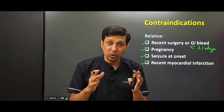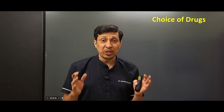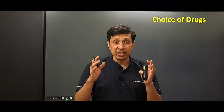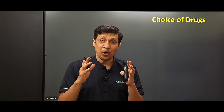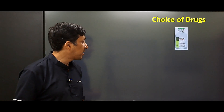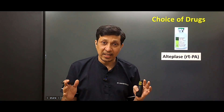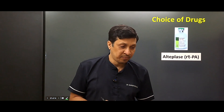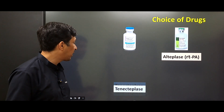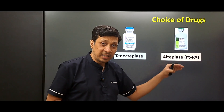Now we come to the most important part: how stroke thrombolysis is done and the choice of drugs. The gold standard is alteplase, also known as recombinant tissue plasminogen activator (rt-PA), approved by most reputed societies. The other emerging option is tenecteplase.